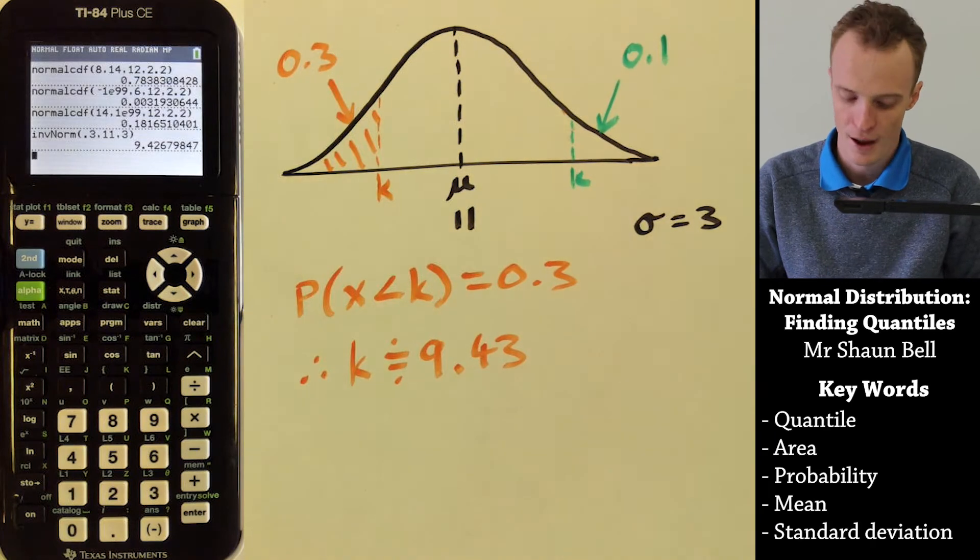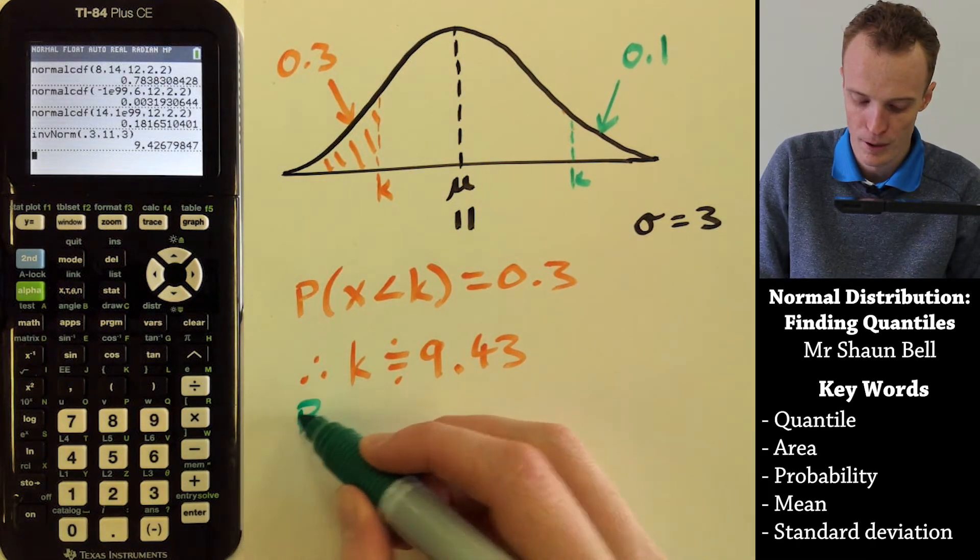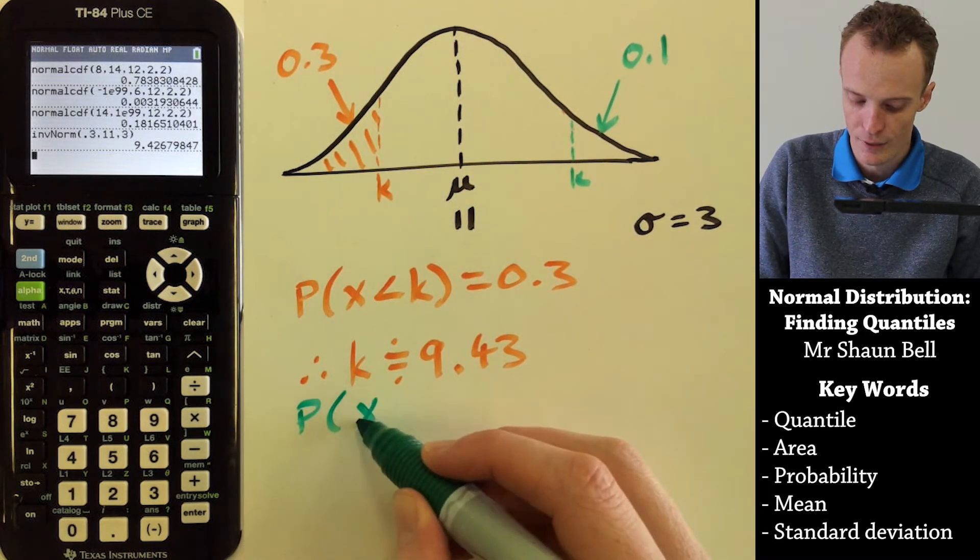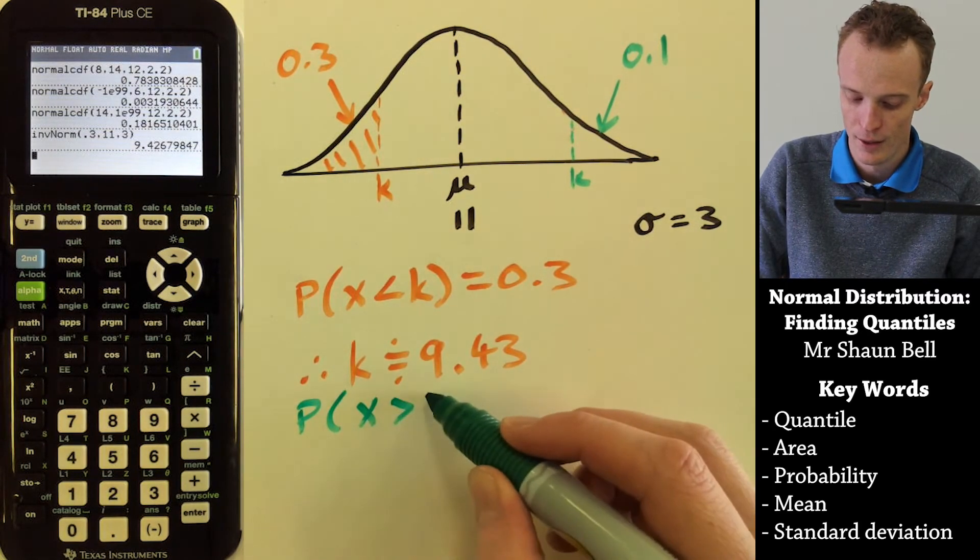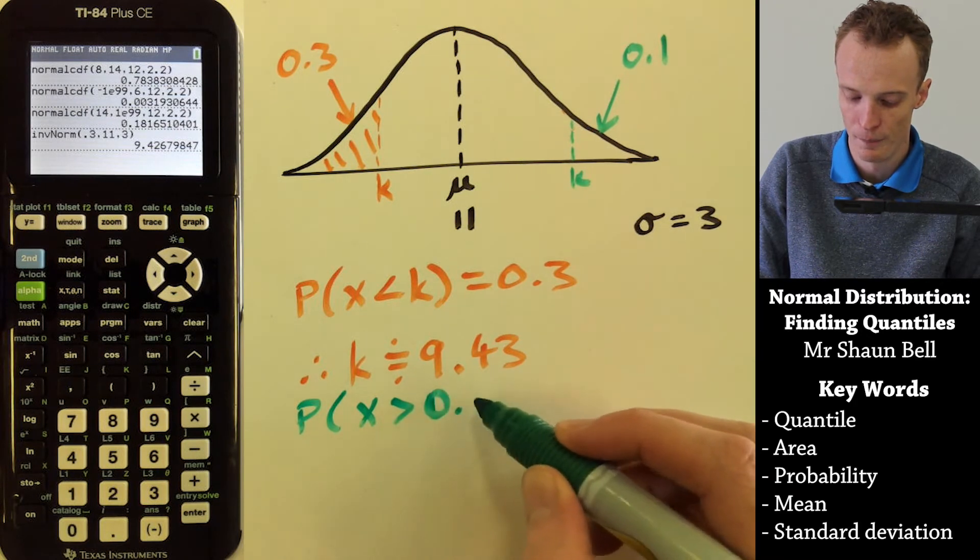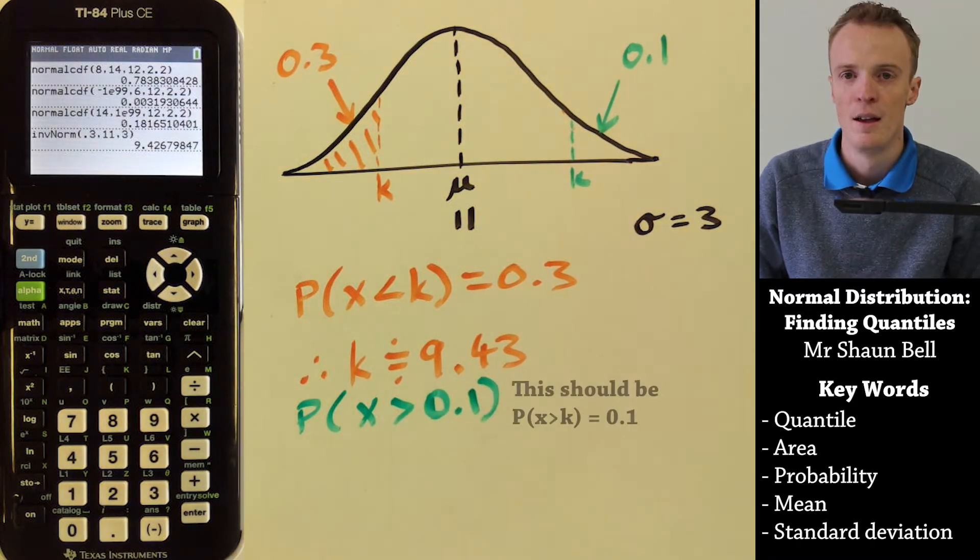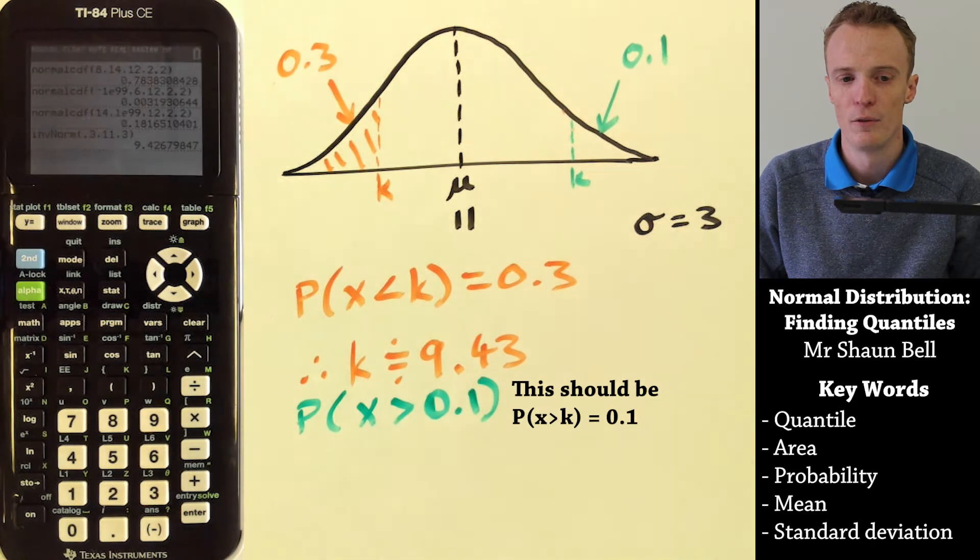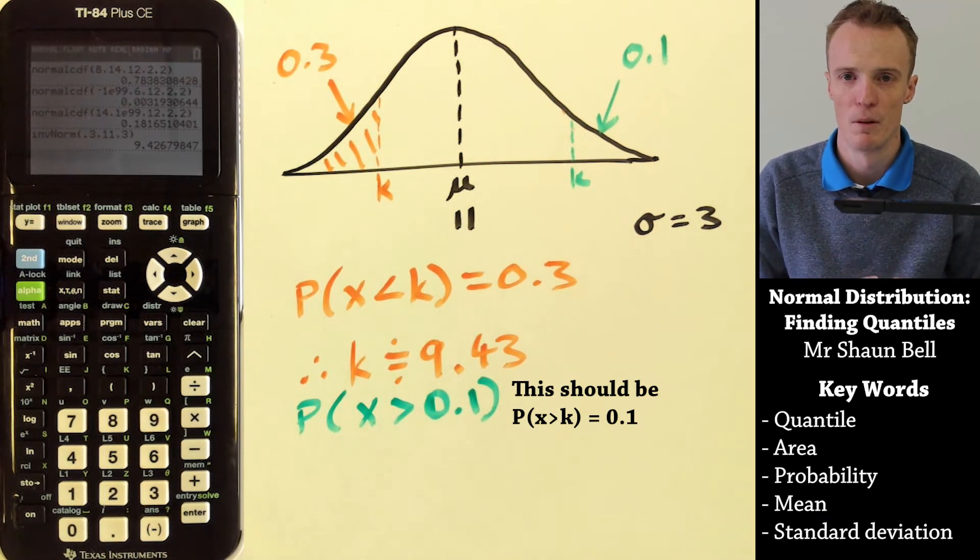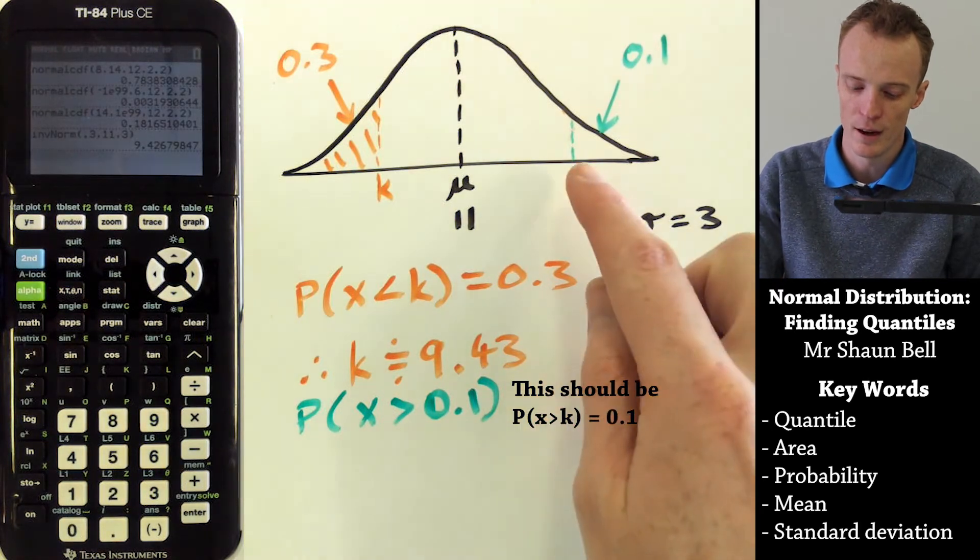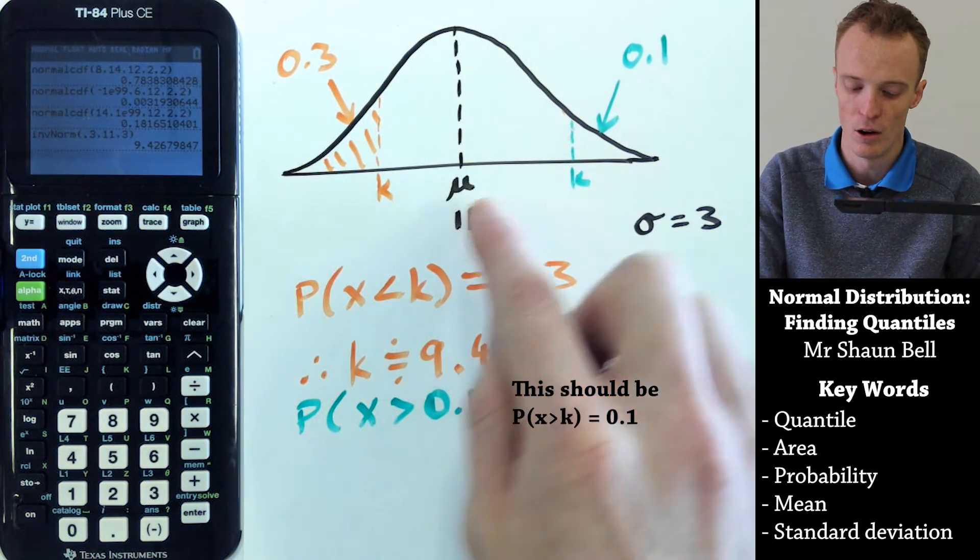To find that, we're looking for the probability that our X value is greater than K, where that probability is 0.1 or 10%. But with the TI-84 Plus calculator, we actually need to flip this problem around. It always finds the area to the left-hand side of K.